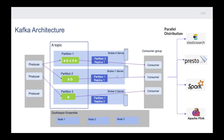Let's figure out how the Kafka architecture works. There are common technical terms like producer, topic, consumer, zookeeper, Kafka broker, partitions, etc. Let's go step by step.